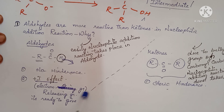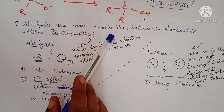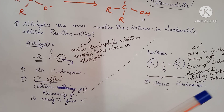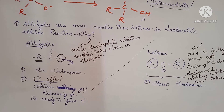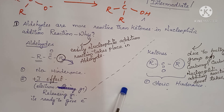In this session we have seen important questions: why aldehydes are more reactive than ketones, comparison of boiling points, why aldehydes and ketones have higher boiling point than ethers and hydrocarbons, and why alcohols and carboxylic acids have higher boiling point than aldehydes and ketones. These are all important questions — just go through them once again. Thank you, thanks for watching.